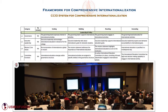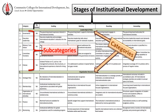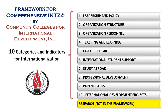This framework was translated into Spanish by US MaxFusion. This tool is a rubric that seeks to establish an institutional internationalization profile by providing descriptions of institutional stages of development. There are broad categories that are broken down into more specific subcategories, each with institutional development stages.